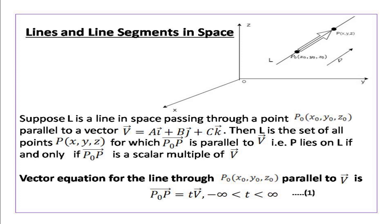Suppose we have to find the equation of a line L in space passing through a point P0(x0, y0, z0), parallel to a vector V = Ai + Bj + Ck. Let P(x, y, z) be any arbitrary point on the line L. Then, as we can see from the figure, vector P0P is parallel to vector V, so these two vectors must be scalar multiples of each other. Using this idea, we define L to be the set of all points P(x, y, z) for which vector P0P is parallel to vector V. That is, P lies on L if and only if vector P0P is a scalar multiple of vector V.